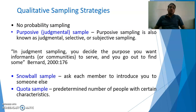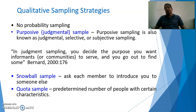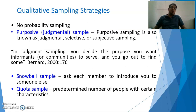You can also use snowball sampling — you ask each member to introduce you to someone else. Quota sampling involves a predetermined number of people with certain factors. Purposive, snowball, and quota sampling have already been discussed in detail in an earlier presentation.